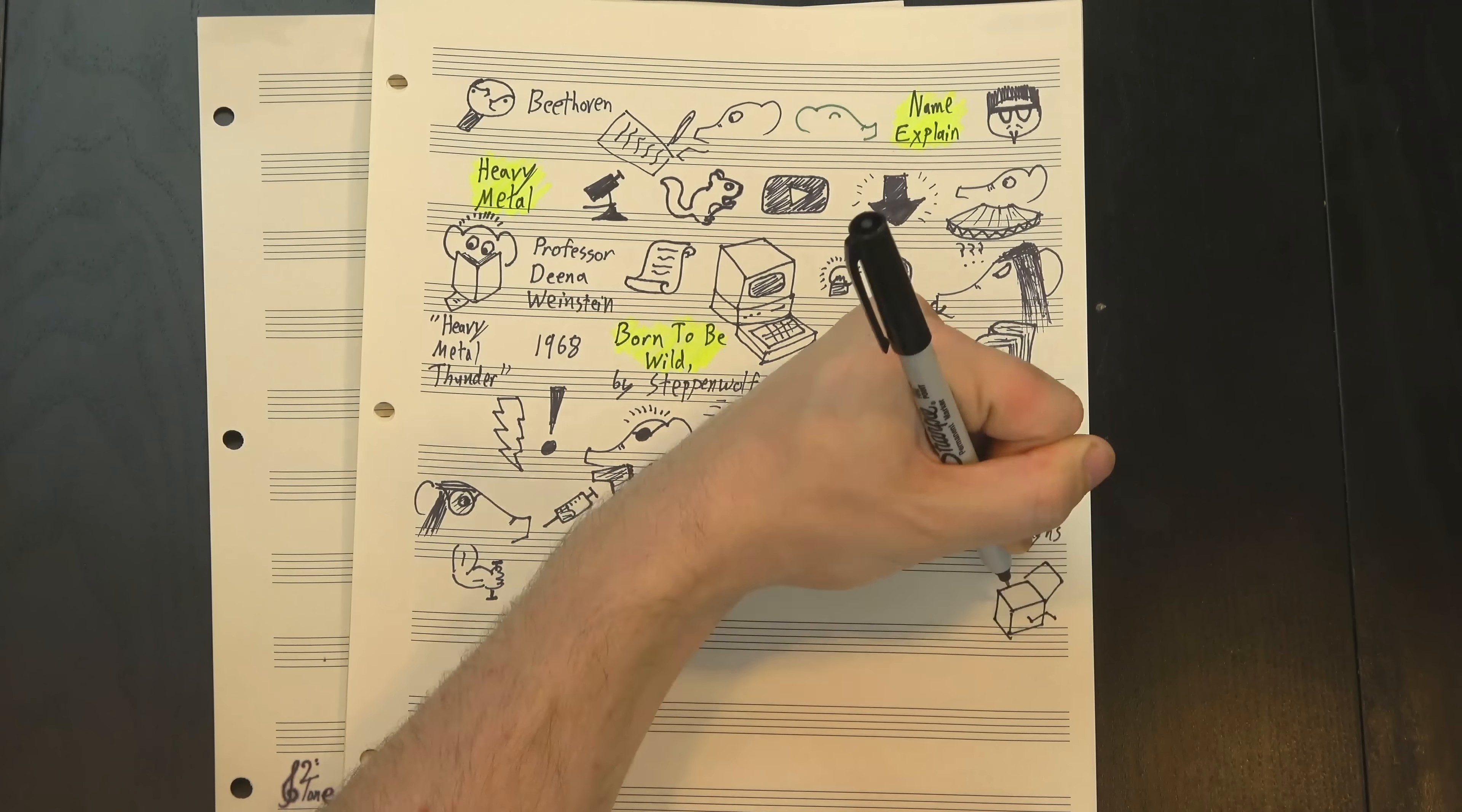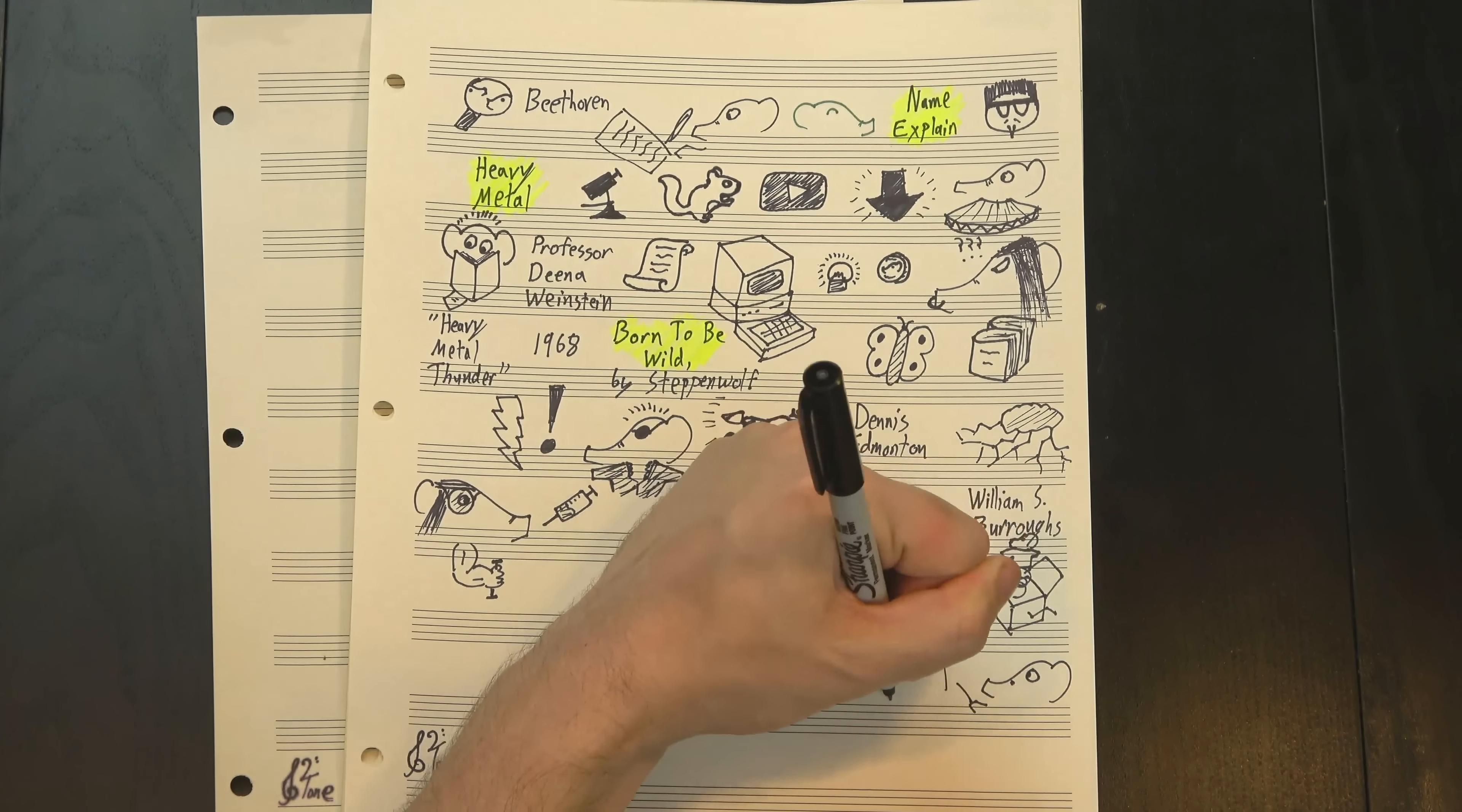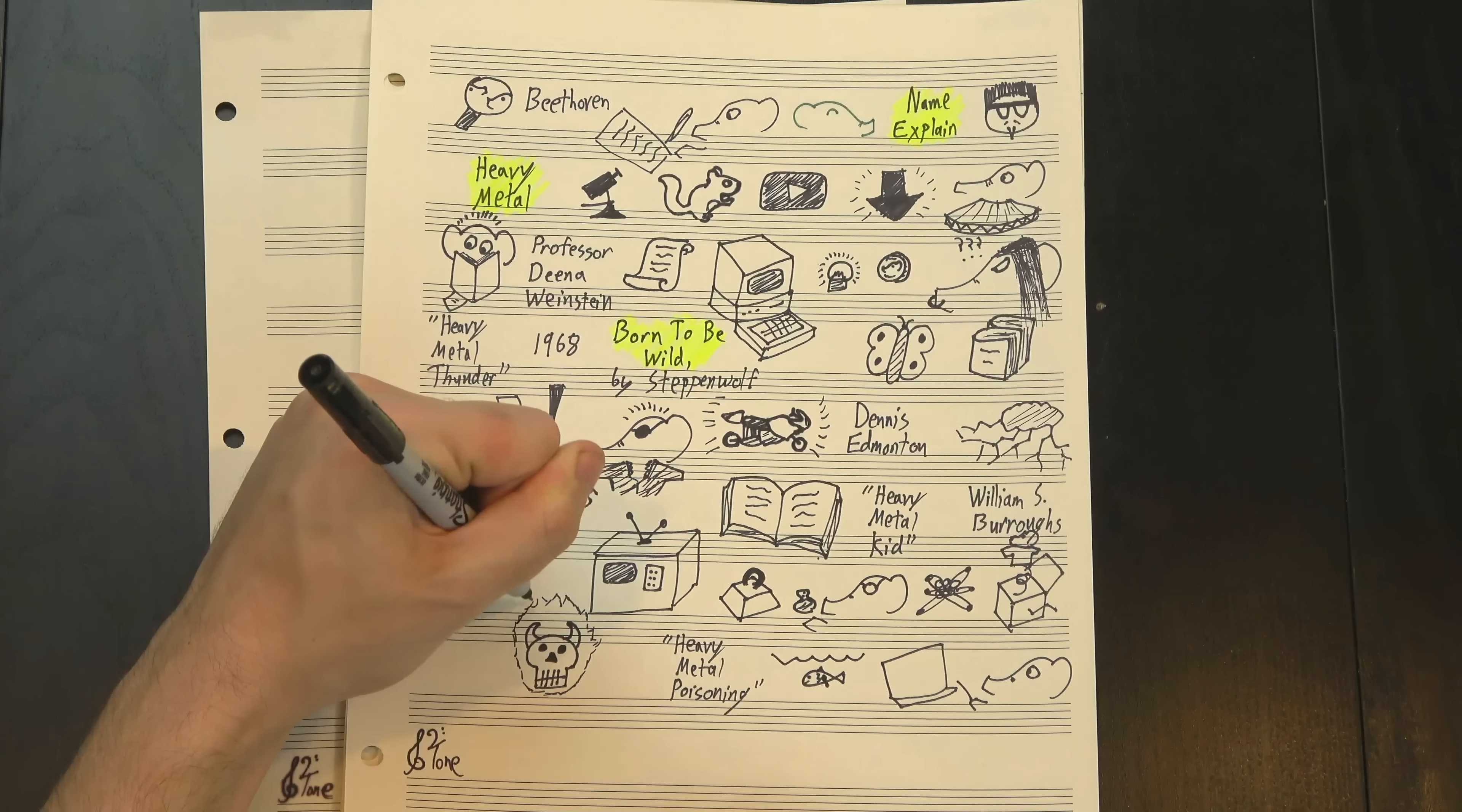But there's a third, perhaps less expected, place where the term heavy metal pops up: science. Chemists use it to describe certain portions of the periodic table, although looking it up there doesn't seem to be a precise definition for which metals actually count as heavy. Still, it's a common term in high school chemistry classes, and it was also in the news at the time. Growing concerns about mercury and fish led to the popularization of the term heavy metal poisoning, where the food we ate was slowly and quietly killing us, which is a pretty good metaphor for the vibe of a lot of metal pioneers.